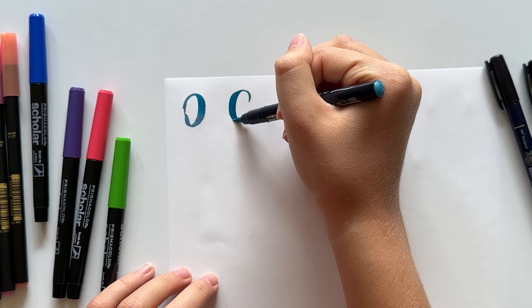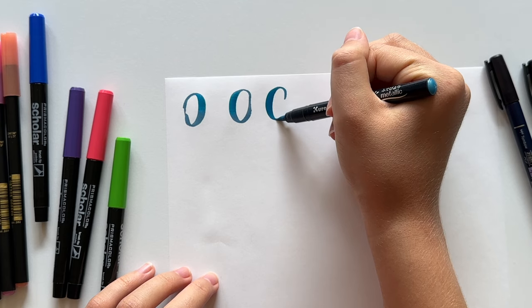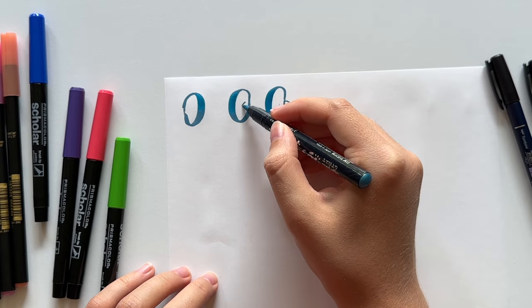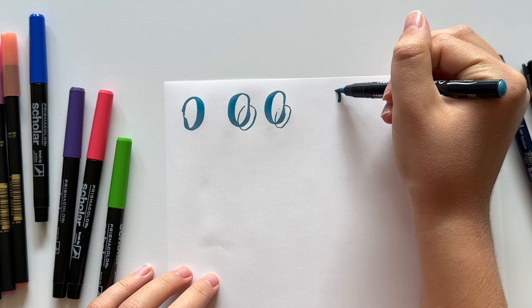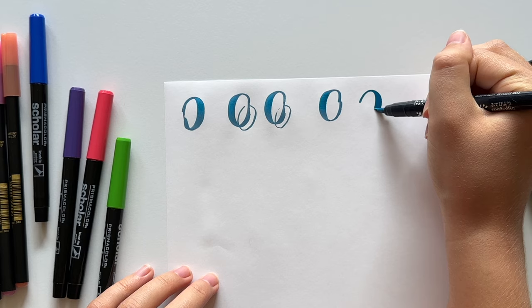One of the trickiest things about doing calligraphy with brush pens is transitioning smoothly between thick and thin lines. So in this video I'm going to talk about some common calligraphy transition mistakes and how you can fix them so your calligraphy will look more smooth and consistent.